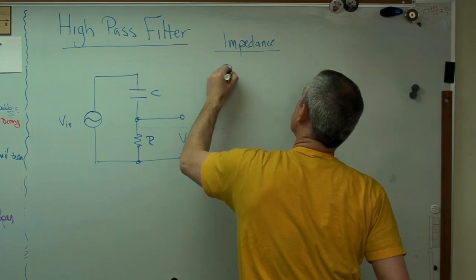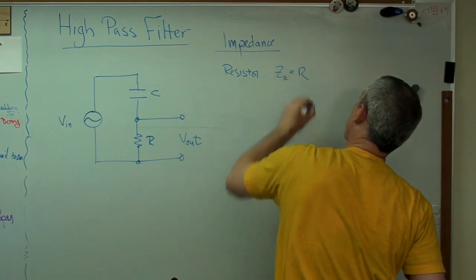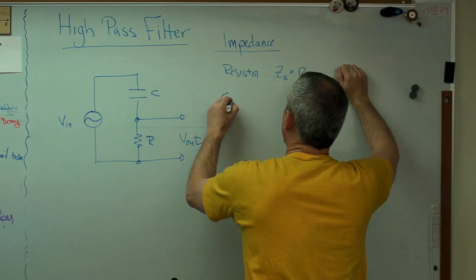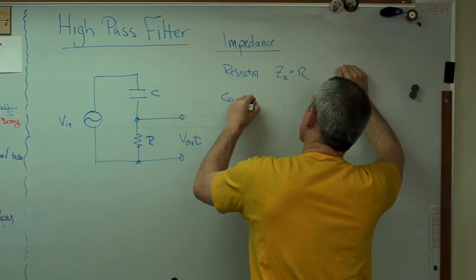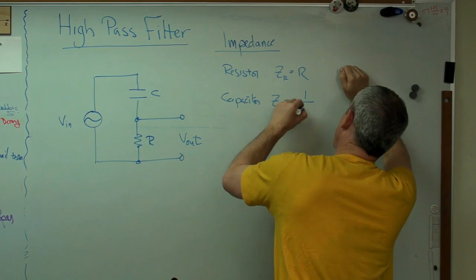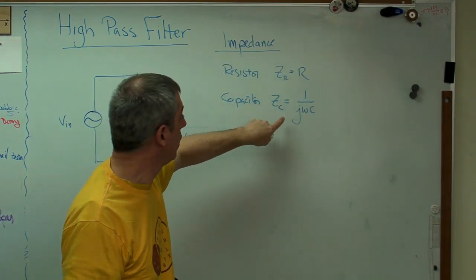So let's look at this real quick. For a resistor, Z, the resistor equals R. Z always refers to impedance. For a capacitor, Z_C equals one over J omega C. Now, one we know is just a number, J. Remember that J is the square root of minus one?